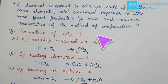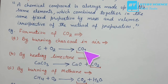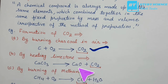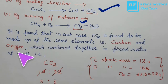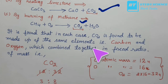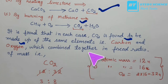For example, carbon dioxide can be formed by burning charcoal in air, by heating limestone, or by burning methane. In each case, CO₂ is found to be made up of the same elements — carbon and oxygen — combining in a fixed ratio. Carbon's atomic mass is 12 U, oxygen's is 16 U; with two oxygens that is 32 U, giving a carbon-to-oxygen ratio of 12:32 = 3:8.